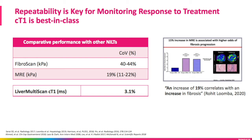FibroScan's coefficient of variation is 44%. This means that if a patient's kPa is 10, when you do the next FibroScan assessment, the patient's kPa needs to be either 6 or 14 in order for you to know that there has been a true change in the patient's liver stiffness — a change of at least 44% needs to occur. MRE elastography also has a significant coefficient of variation of around 19%, which also limits the technology to detect worsening of liver fibrosis. Liver Multi-Scan's coefficient of variation is only 3.1%, which makes it best in class to detect change in the fibroinflammatory activity of the liver, and thus best in class to accurately monitor changes in liver disease.